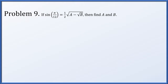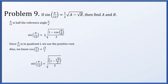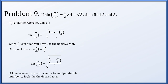In problem 9, if sine of π/12 equals (1/2)√(a minus √b), find the correct values of a and b. Since π/12 is half of the reference angle π/6, we use the half-angle formula for sine: sine of π/12 equals the positive square root of (1 minus cosine of π/6) over 2. Since π/12 is in quadrant 1, we use the positive root, and cosine of π/6 is √3/2. Representing 1 as 2/2 in the numerator gives (2 minus √3)/4 under the radical, which equals (1/2)√(2 minus √3). Therefore, a equals 2 and b equals 3.